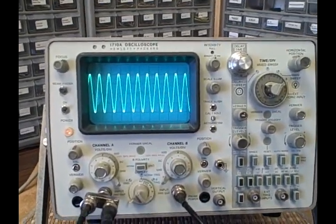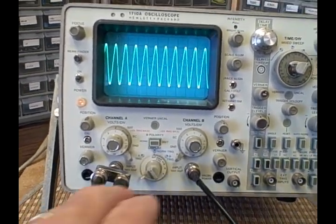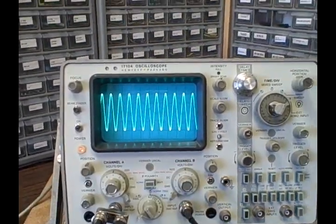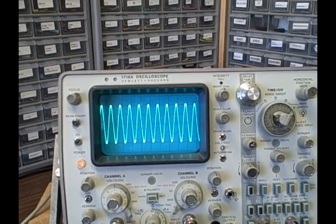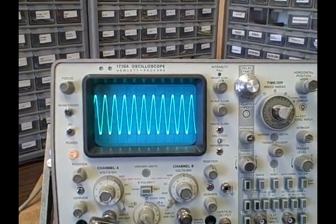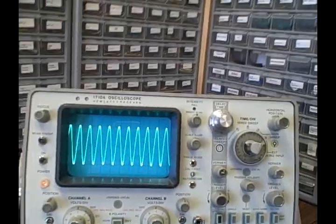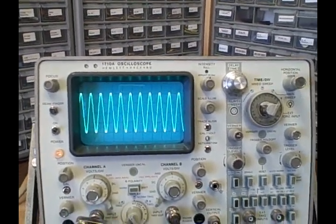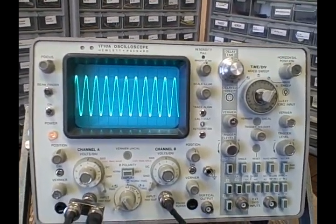As you can see, we have one signal on there, but we show that we're in alternating mode. We have two signals on there, but you only see one. That's because they're tracking each other very closely, which they should if they're in good calibration.